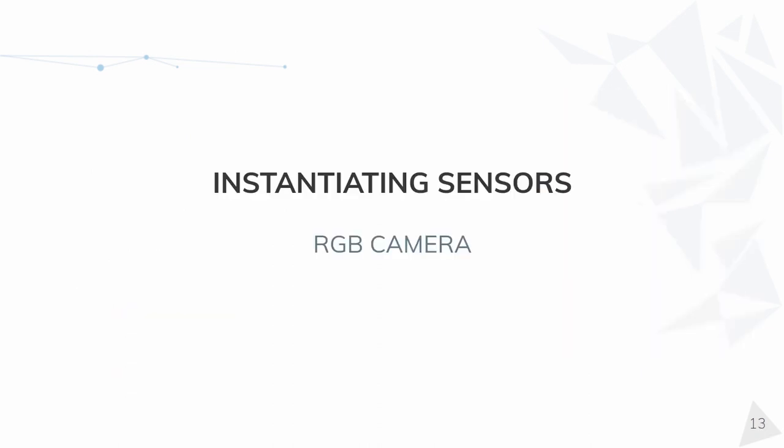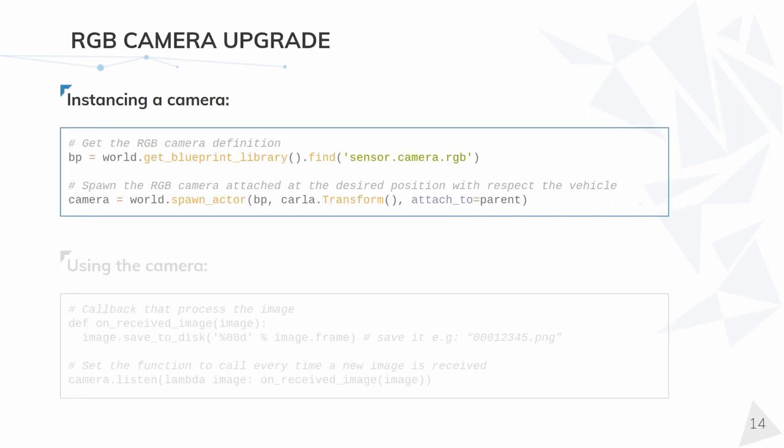I will now show you how to spawn, use, and configure them. For those of you who don't know, in order to initiate a camera or another type of sensor in CARLA, we recommend using the Python API. It is really easy to use and works out of the box. If you prefer, you can still use the C++ API too, but in this case we will focus on the Python API.